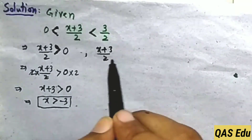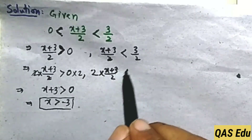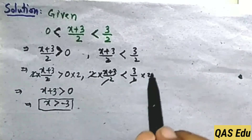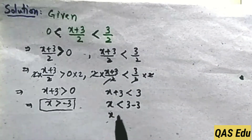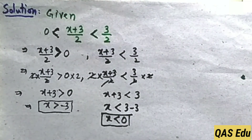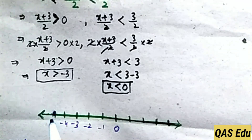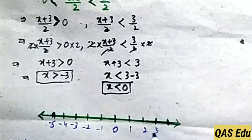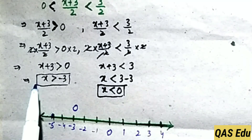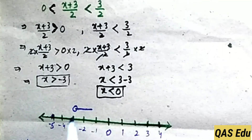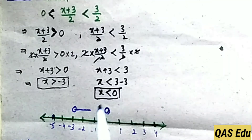For statement two, (x+3)/2 is less than 3/2: multiply both sides by 2. The 2s cancel, giving x plus 3 is less than 3. Move 3 to the right as minus 3. So 3 minus 3 equals 0, and x is less than 0. That is our second statement. Now show both statements on the number line.